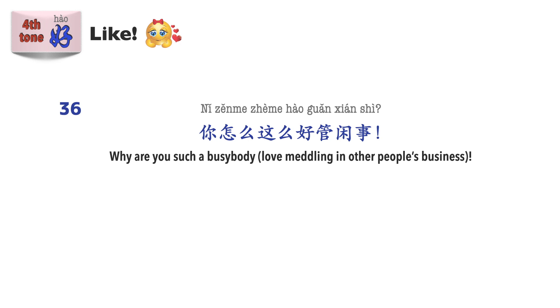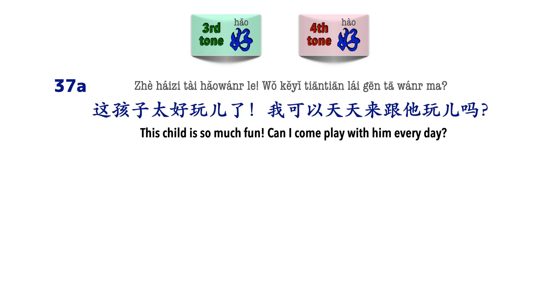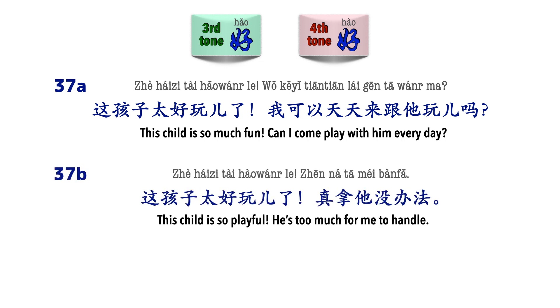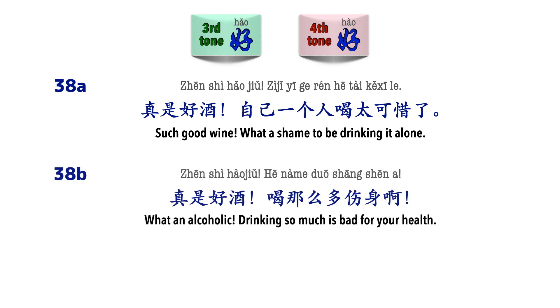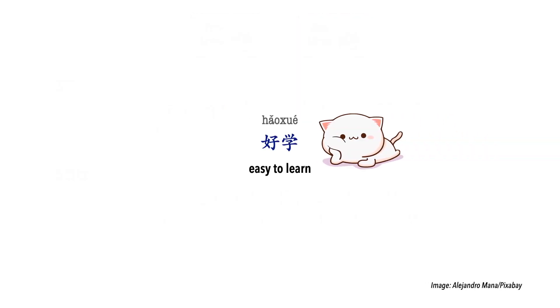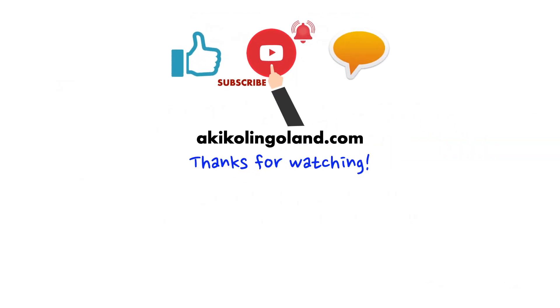Sometimes you may be unsure if you're looking at the third tone or the fourth tone. In such cases, context is your only key. For example: 这孩子太好玩了，我可以天天来跟他玩吗? (third tone: so fun to play with) vs. 这孩子太好玩了，这拿他没办法 (fourth tone: this child loves to play too much). 真是好酒，自己一个人喝太可惜了 (third tone: great wine) vs. 真是好酒，喝那么多伤身啊 (fourth tone: really loves alcohol). So, how was the lesson today? Was it 好学? If you've enjoyed it, don't forget to like and subscribe. Till the next lesson, 再见!